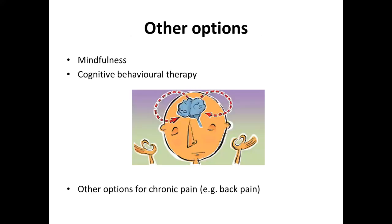There are other options, and there's some evidence that mindfulness and cognitive behavioural therapy can be useful. Looking back over my headache career, certainly ten years ago before we started using Botox regularly, CBT was often the only option for patients with chronic headache. And if you have pain in another part of the body such as back pain or hip pain, we have to think about ways of treating that pain without necessarily using painkillers — for example, a TENS machine for back pain, or a hip replacement for hip pain.